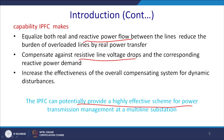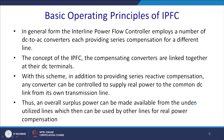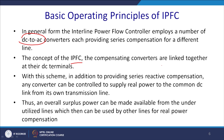If there is a sag in one line and swell in another, it can transfer power from one transmission line to the other. In general, the IPFC employs DC-to-AC converters each providing series compensation of different lines. The composite converters are linked together with a common DC link. In addition to providing series reactive compensation, any converter can be controlled to supply real power to the common DC link from its own transmission line, making surplus power available from under-utilized lines for real power compensation.